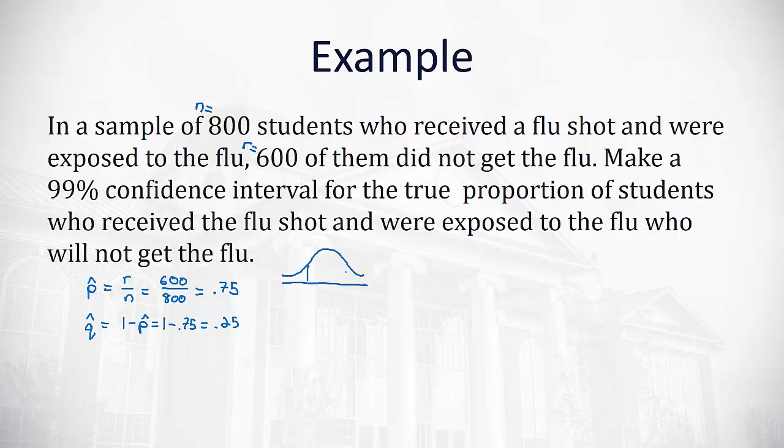Similar to our previous confidence intervals, we want 99% on the inside, which means alpha, the tails, is 1 minus 0.99, which equals 0.01. Since we're doing a z with proportions, proportions are always z.